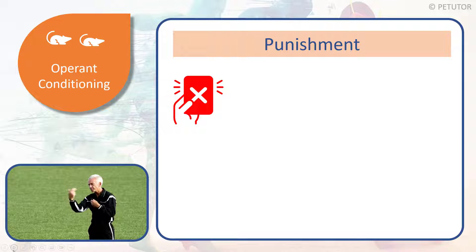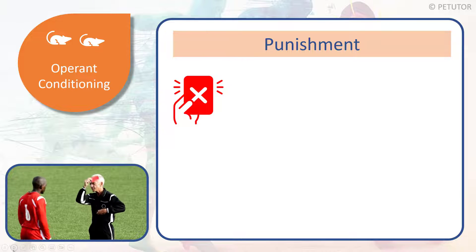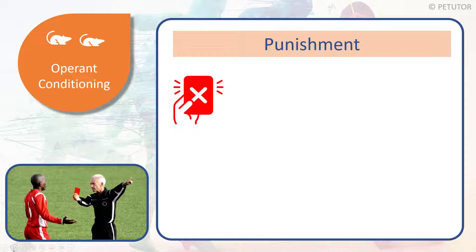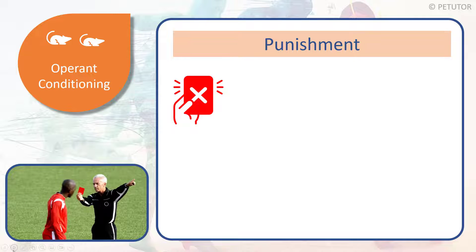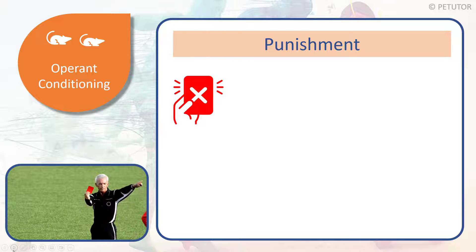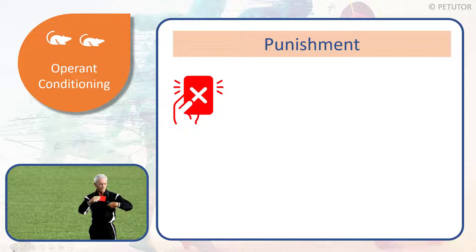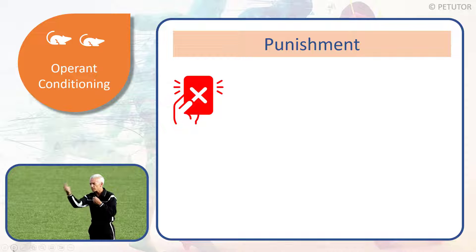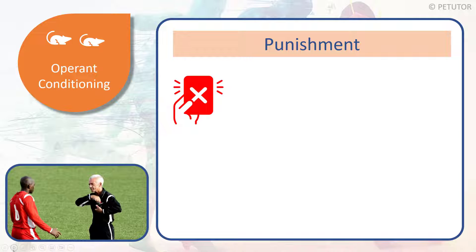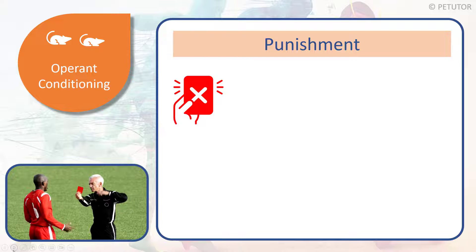Let's look at punishment and how it fits in with operant conditioning. You can see from the video the referee is giving the player a red card as a form of punishment. We assume he's made a horrendous foul tackle, handled the ball, or done something he shouldn't have done and has been punished for it. So how does that fit into operant conditioning in terms of the SR bond, desirable behavior, and undesirable outcomes?